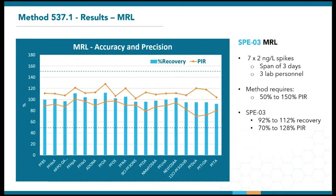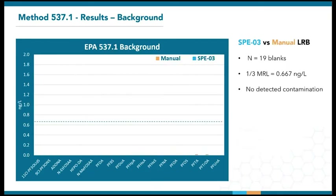The background requirement for the method is once again one third of the MRL, which comes to 0.67 ng per liter as shown by the dotted line. The plot shows the lab reagent blank (LRB) measurements across 19 extractions. Both the manual and SPE03 extractions have pretty much undetectable background. When we checked with them, they estimate it to be in a noise range of around 0.01 ng per liter. The tiny orange bars for PFTA and PFTRDA are just from a single manual extraction that had about 0.2 ng per liter of background, which is still far from the limits.